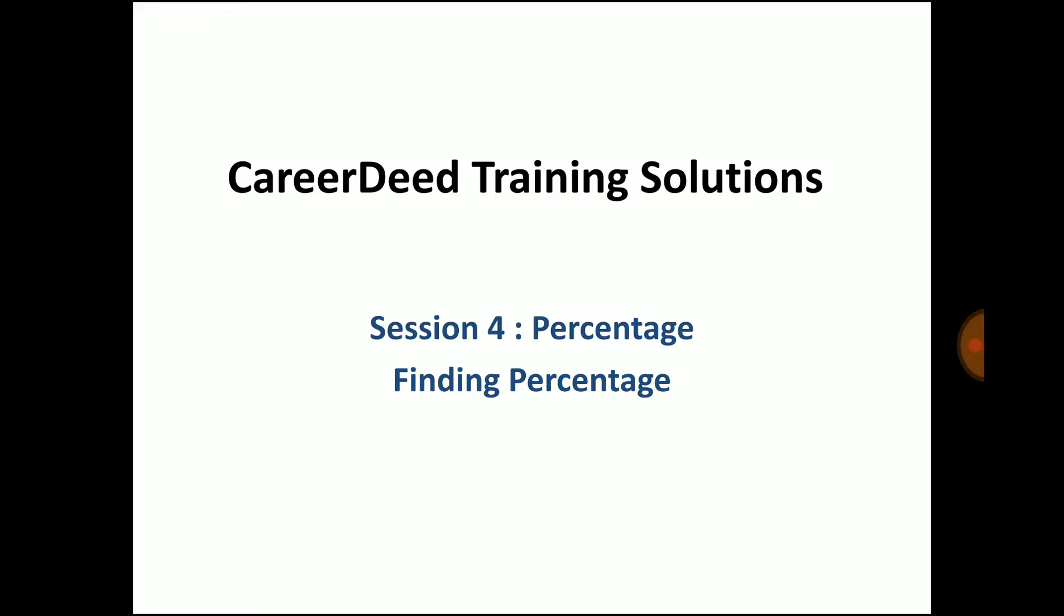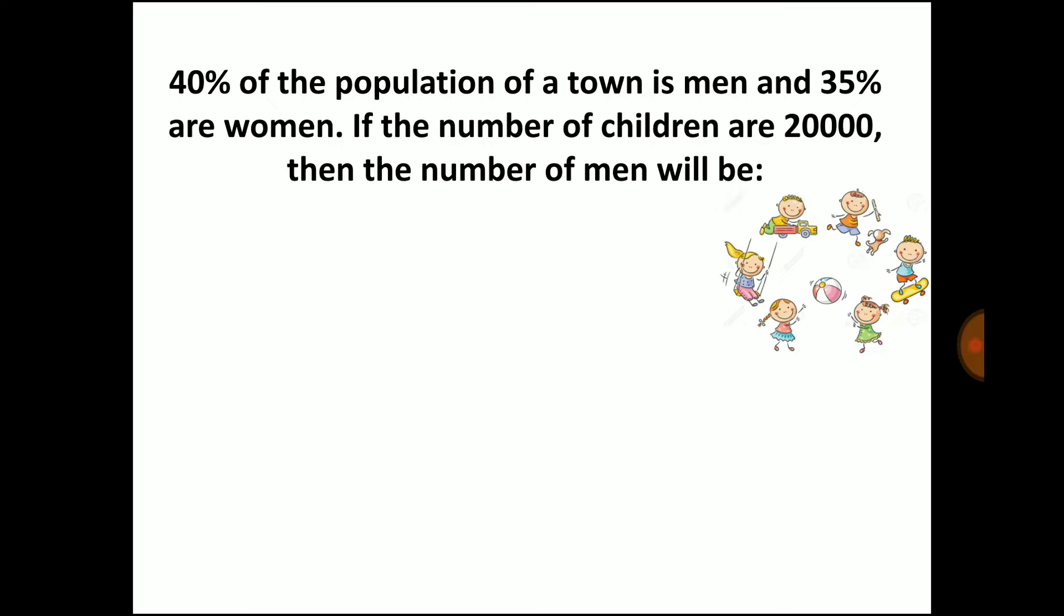Now let us enter into an example. 40% of the population of a town is men and 35% are women. If the number of children are 20,000, then the number of men will be?